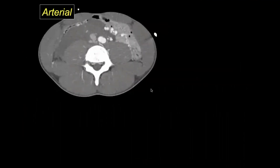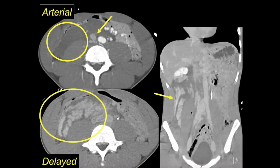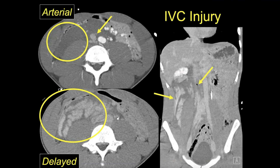Let's look at a couple of cases. In this example, there is significant irregularity of the IVC and a large retroperitoneal hematoma. Note significant active arterial extravasation on delayed images. On the delayed coronal reformation, there is a filling defect within the IVC, irregularity of the vascular structure, and a large amount of active arterial extravasation with segmental devascularization of the lower pole of the right kidney. This patient was treated surgically and actually survived.